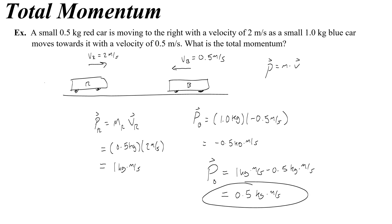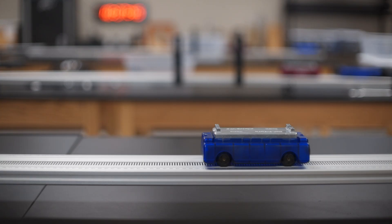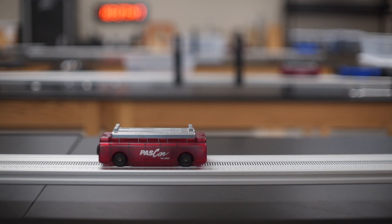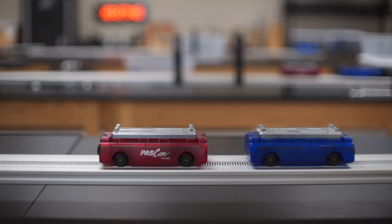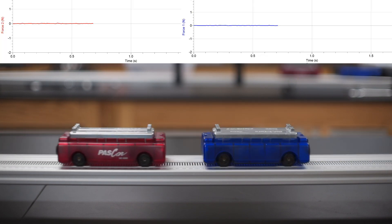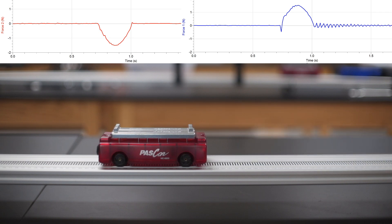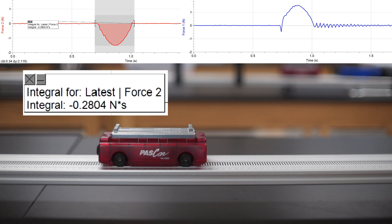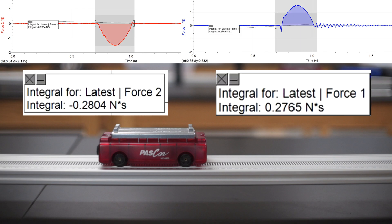That is the total momentum in the beginning when considering both objects. Now let's talk about conservation of momentum. If we rewind and look at the force versus time graphs, we see that there is a certain impulse that each car experiences. The red car experiences negative 2.8 newton seconds of impulse, and the blue car experiences positive 2.8 newton seconds of impulse.